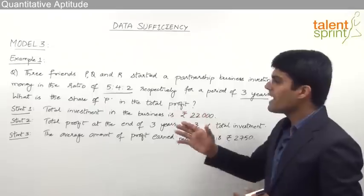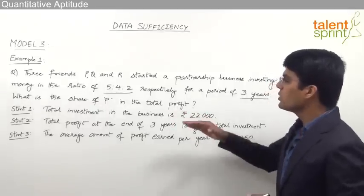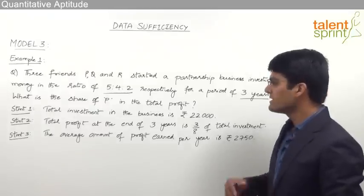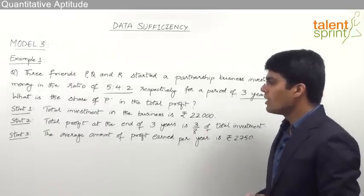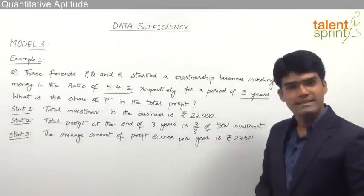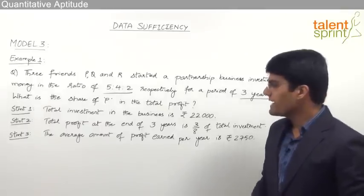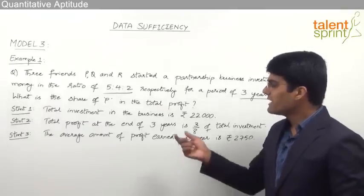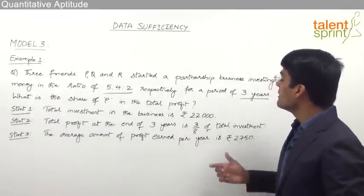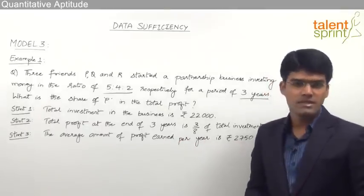The given statements are: Statement 1 — total investment in the business is rupees 22,000. Statement 2 — total profit at the end of 3 years is 3/8 of the total investment. Statement 3 — the average amount of profit earned per year is rupees 2,750.